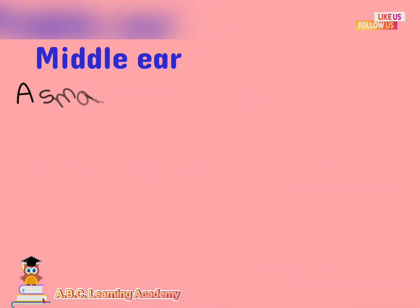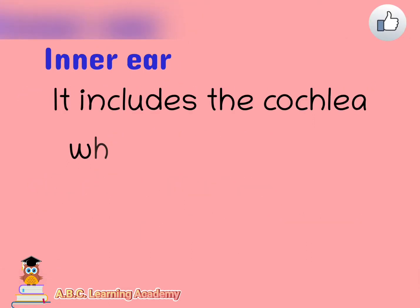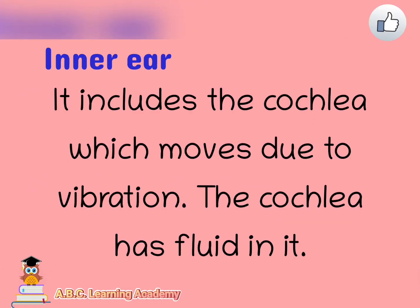Next is the middle ear. In here, there is a small air-filled space inside of the eardrum. It also includes three tiny bones — these are the hammer, anvil, and stirrup. It also includes the cochlea, which moves due to vibration.